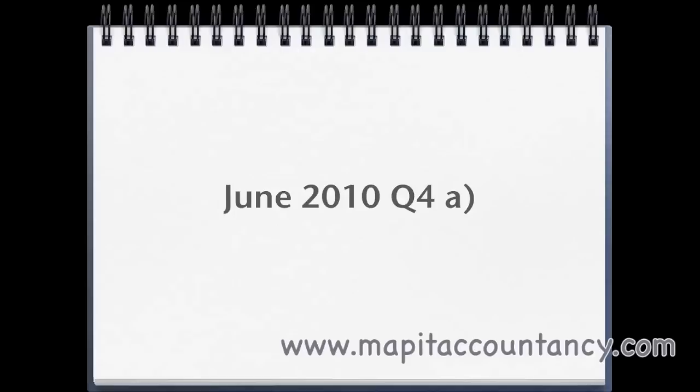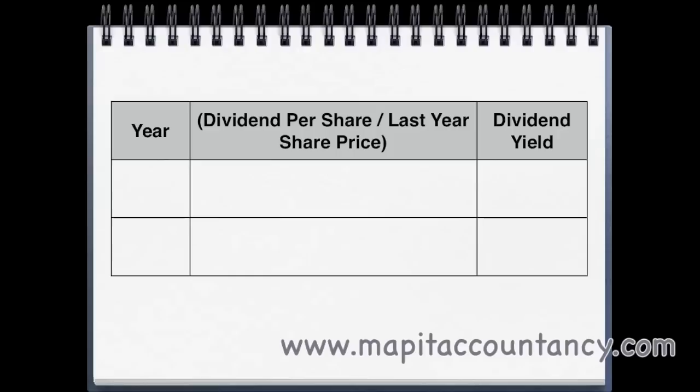Starting off with dividend yield — we know the formula: dividend per share over last year's share price, representing how much we needed to invest to get that dividend. In 2008, the dividend per share is 38.5 cents; the share price at the end of 2007 was $7.40. So 38.5 over 740 gives us a yield of 5.2%.